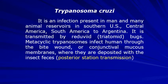It is transmitted by the reduviid bug. The metacyclic trypanosomes infect men through the bite wound by penetrating the bite wound themselves, or through conjunctival mucous membranes where they are deposited. It is transmitted with the insect feces. When the insect takes a blood meal, reflexively it deposits feces which contain the metacyclic trypanosomes. This is called posterior station transmission.